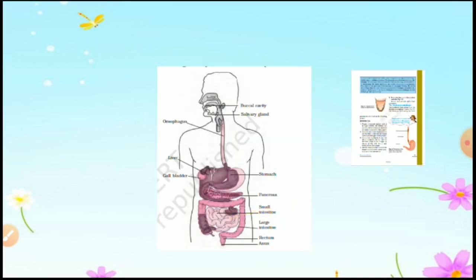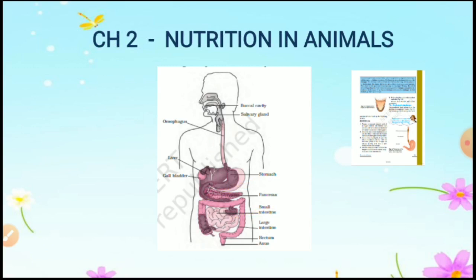In the last parts — parts 2, 3, and 4 — we discussed the alimentary canal. We are discussing the human digestive system, which has an alimentary canal that starts from the buccal cavity and ends at the anus.